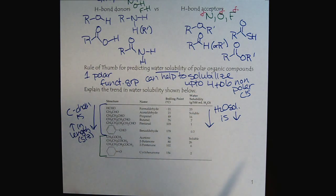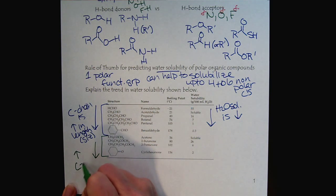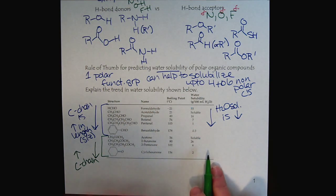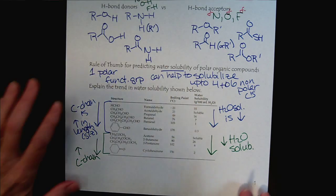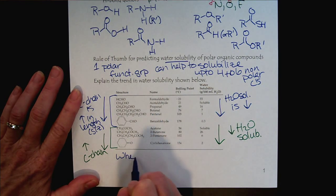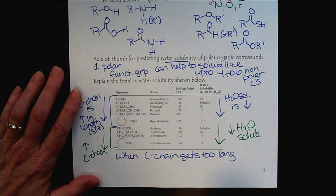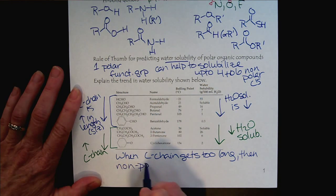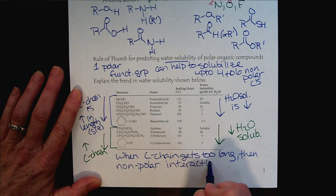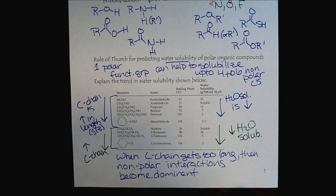This is a common trend among all functional groups. Looking at the ketones, we see the same trend — an increasing carbon chain accompanied by a decrease in water solubility. When the carbon chain gets too long, you can think of it like a scorpion tail whipping about, repelling the polar water. The nonpolar interactions take over and become dominant, so eventually the compounds are no longer water soluble.